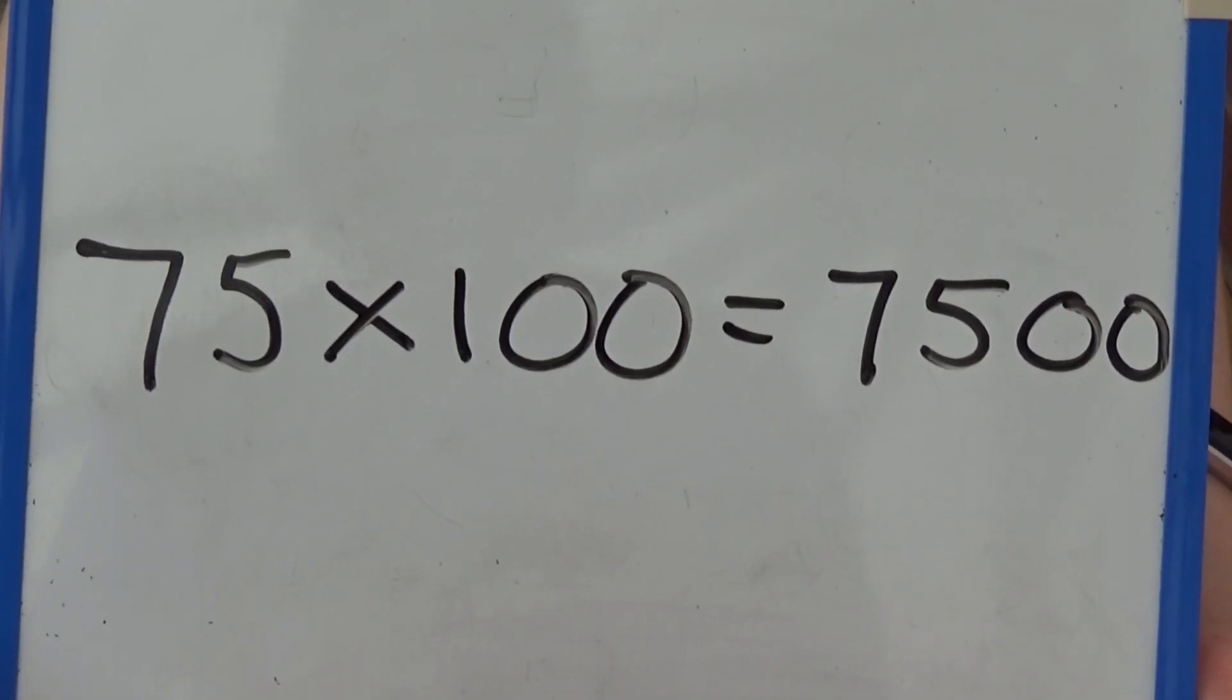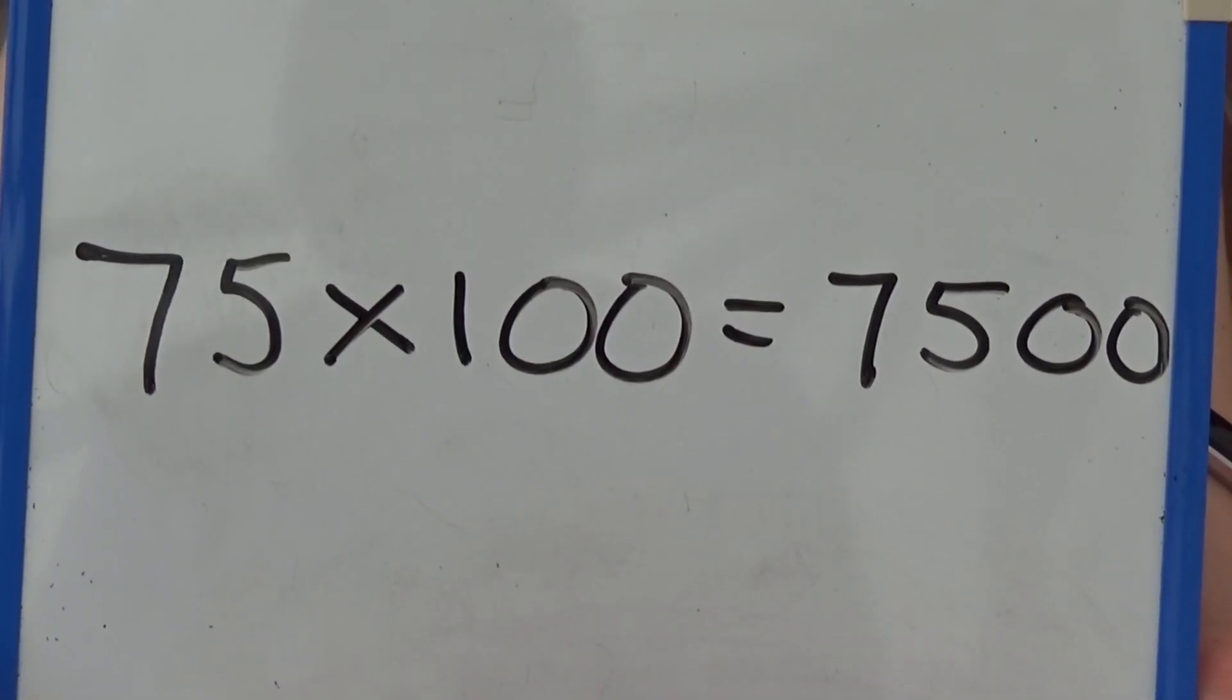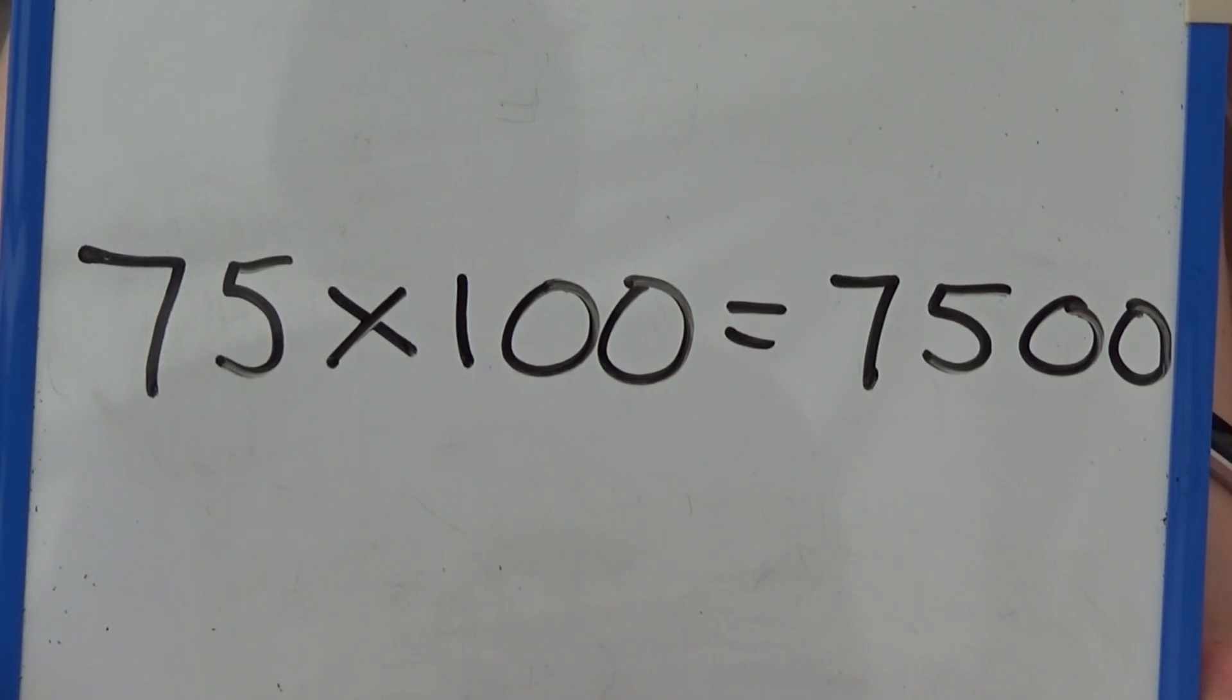We can see from both of these that 75 times 100 equals 7,500.